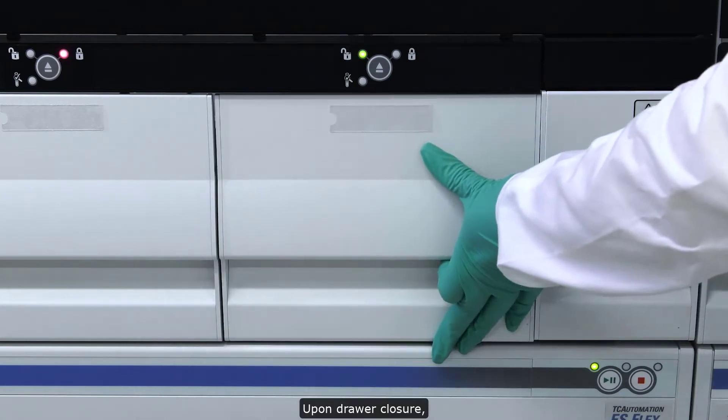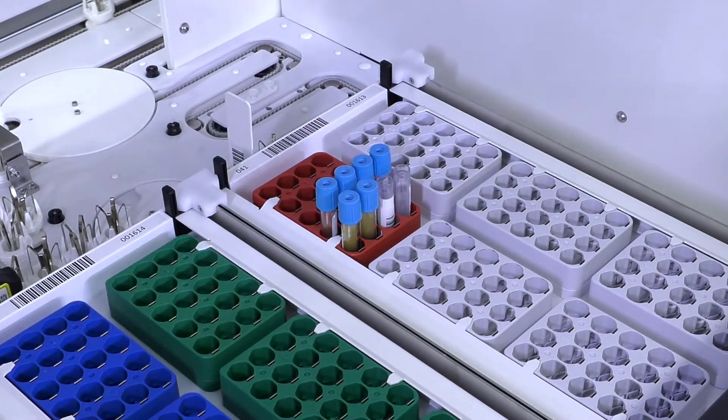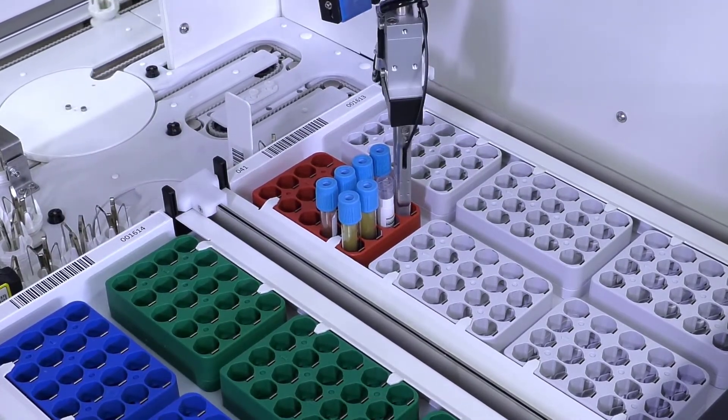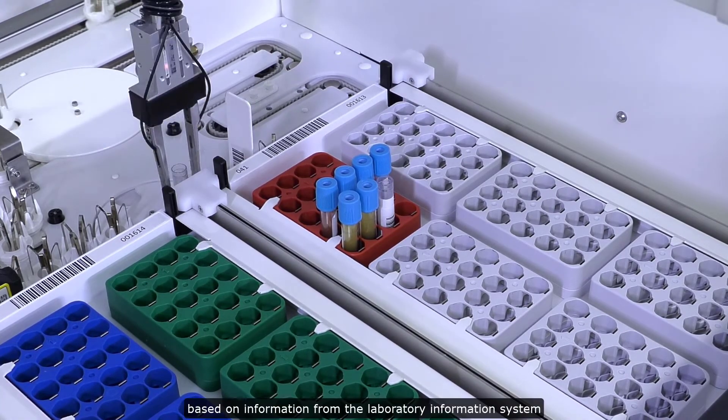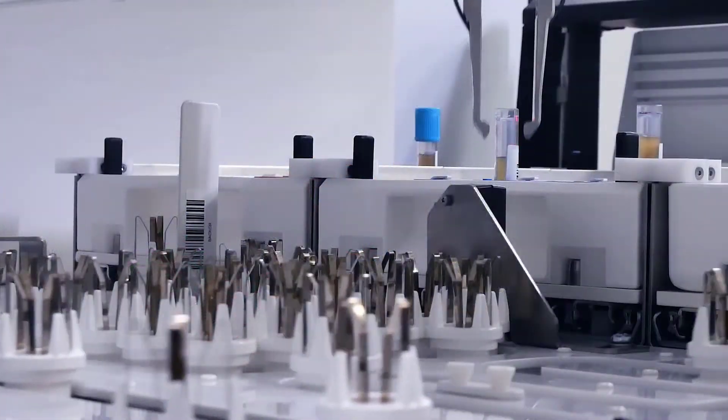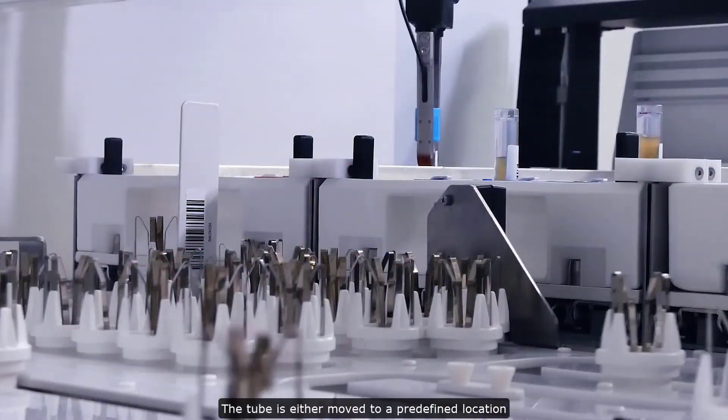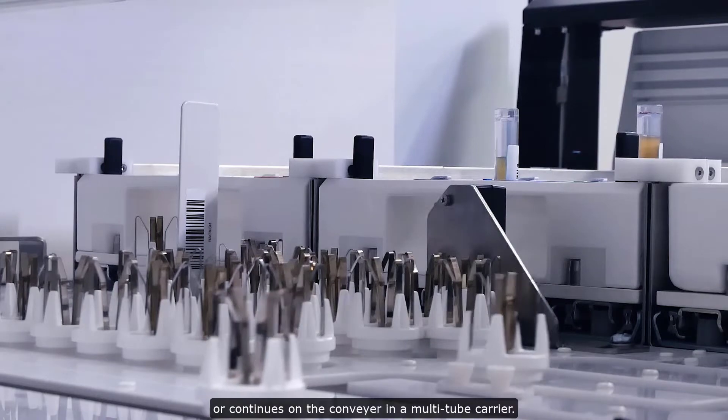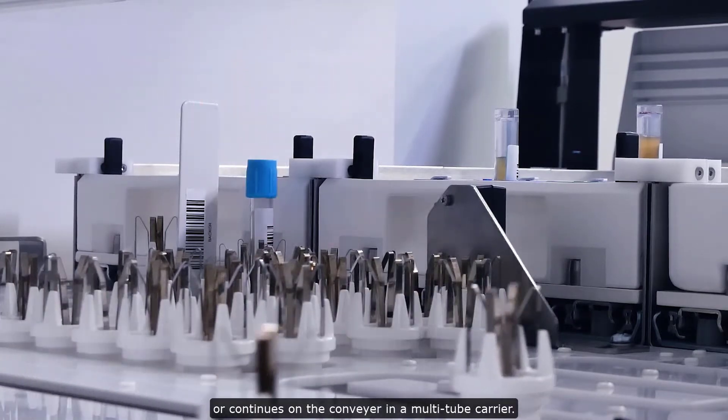Upon drawer closure, the arm unloads samples from racks into a multi-tube carrier, scanning the barcode and assigning the route based on information from the laboratory information system and HemoHub. The tube is either moved to a predefined location for sorting and storage, or continues on the conveyor in a multi-tube carrier.